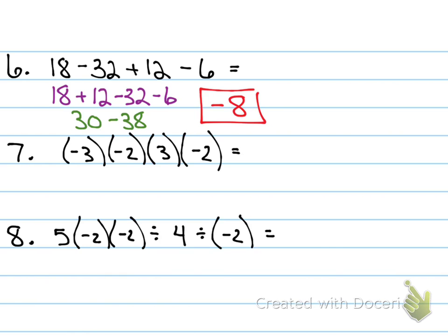Number seven. Multiply straight across. 3 times 2 is 6, times 3 is 18, times 2 is 36. Positive or negative? Negative. Wait, but there's four numbers. I see four numbers here. But there's only three negatives, guys. So, since there's three negatives, it's a negative 36.